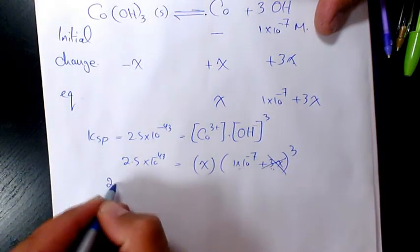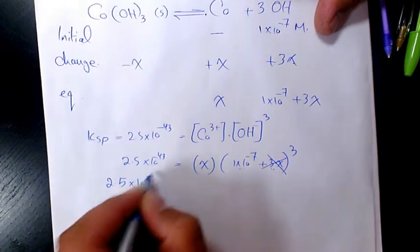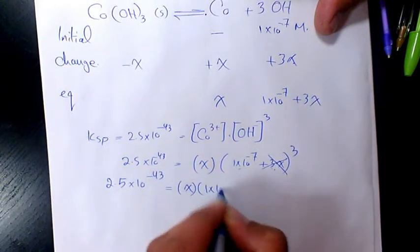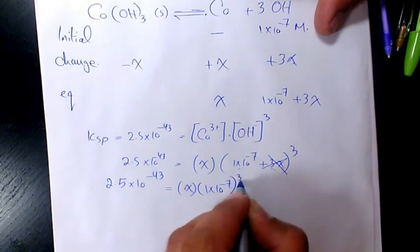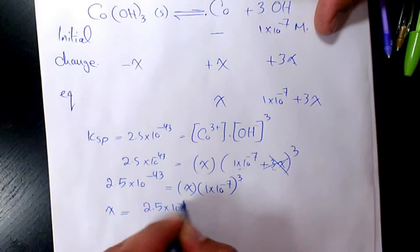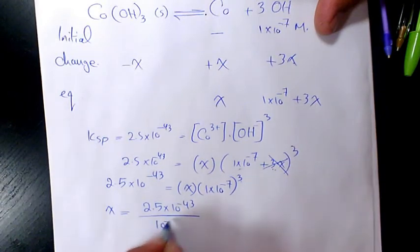So we're going to say 2.5×10⁻⁴³ equals to x times 1×10⁻⁷ to the power of 3. So x will be 2.5×10⁻⁴³ over 10⁻²¹.